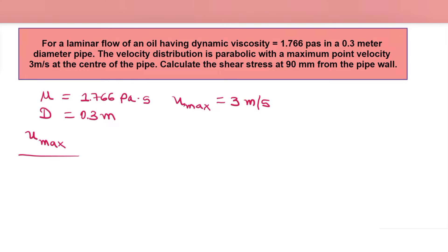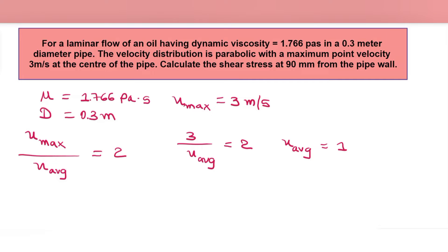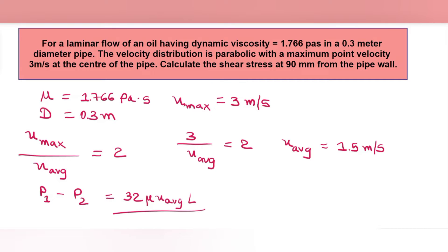First we'll find the average velocity. We have u_max / u_average = 2 for circular pipes. So 3 / u_average = 2, therefore u_average = 3/2 = 1.5 m/s. We also know the equation for pressure drop: p1 - p2 = 32 * mu * u_average * L / d².